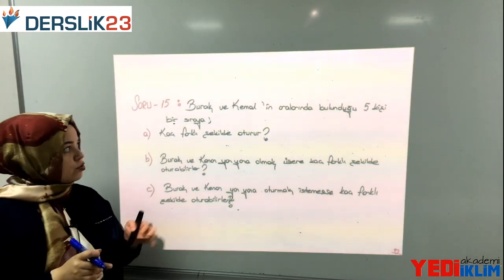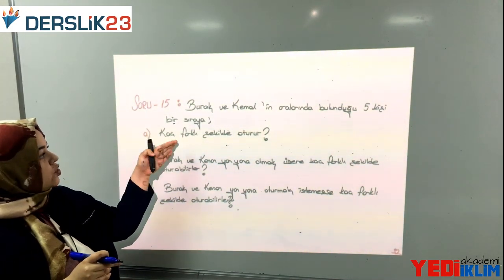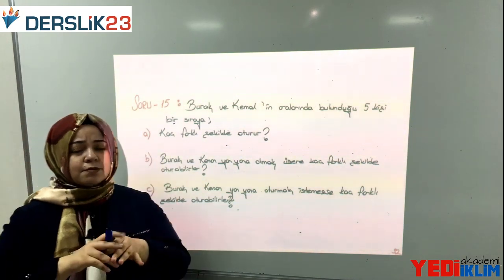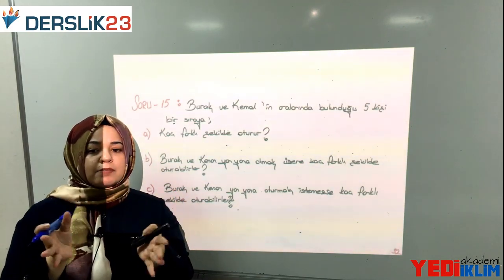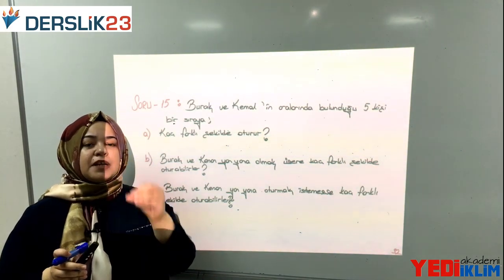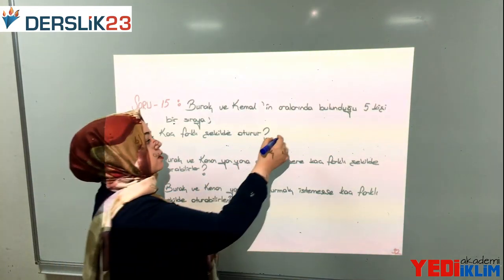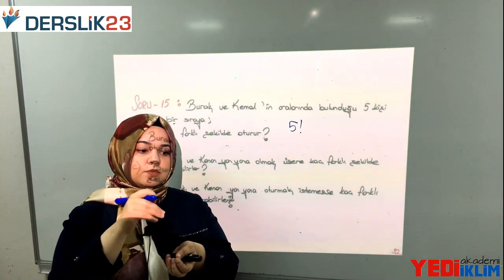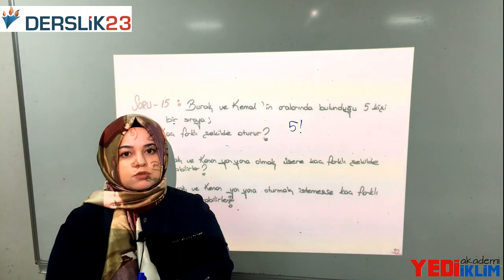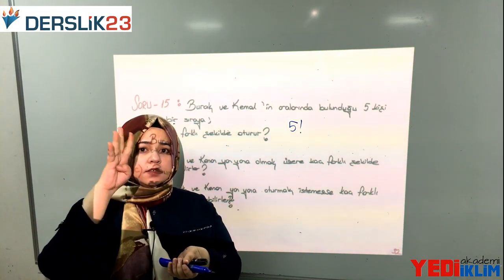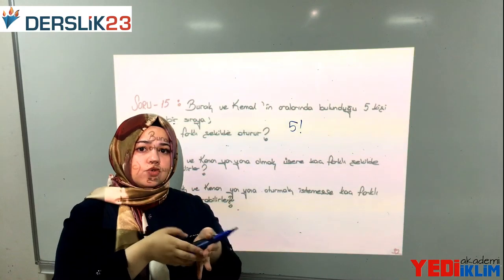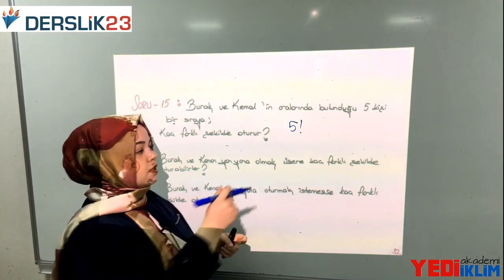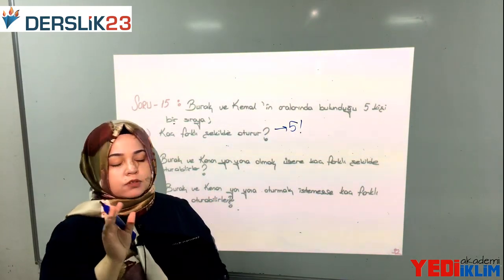Yeni bir sorumuz. Burak ve Kemal'in aralarında bulunduğu 5 kişi bir sıraya kaç farklı şekilde oturur? A maddesine baktığımda hiçbir koşul verilmemiş. Elinde 5 kişi var, 5 kişinin bir sıraya nasıl oturacağını düşünüyorsun. Birincinin oturması için 5 sıran var, bir tanesini oturtturdun, geriye 4 kaldı, sonra 3... Bu şekilde 5! yani 5 faktöriyel. A şıkkımız 5! = 120.